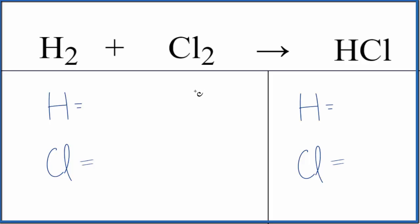So to balance the equation we need to count the atoms up. We have two hydrogen atoms, two chlorine atoms.